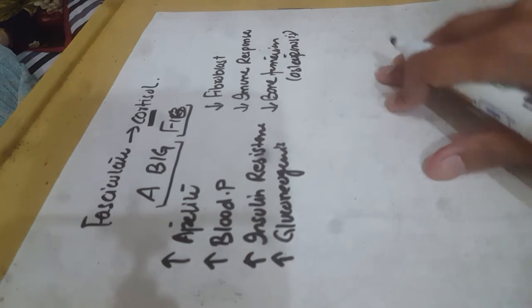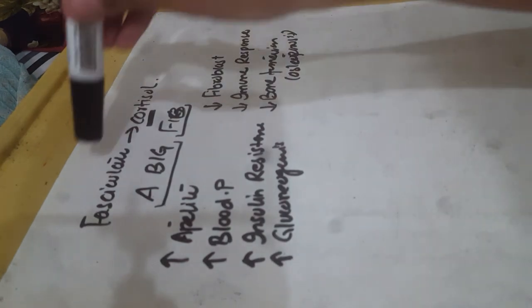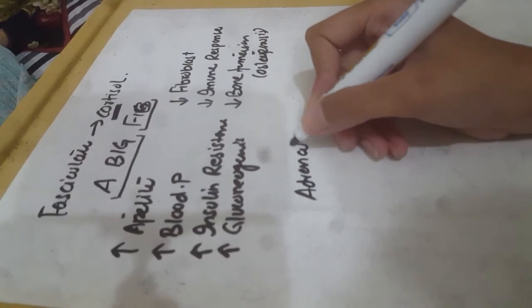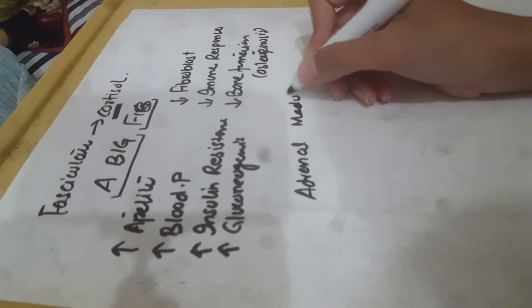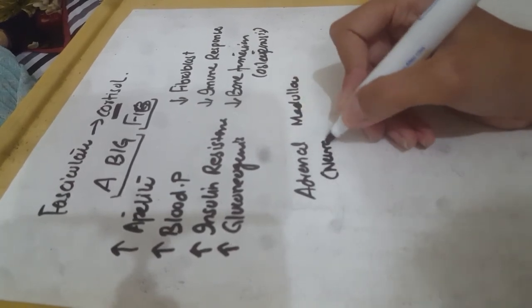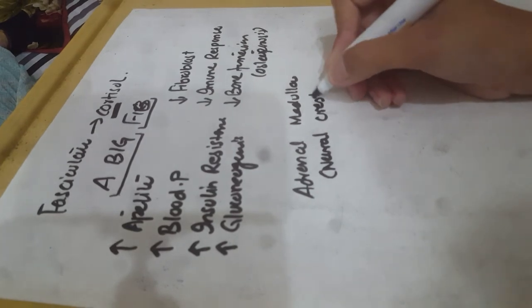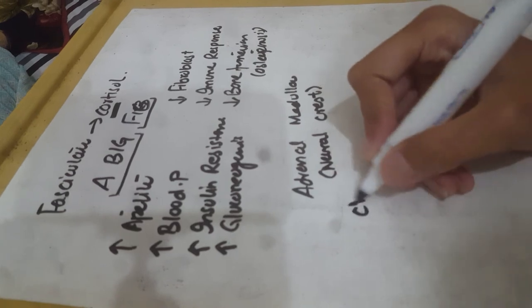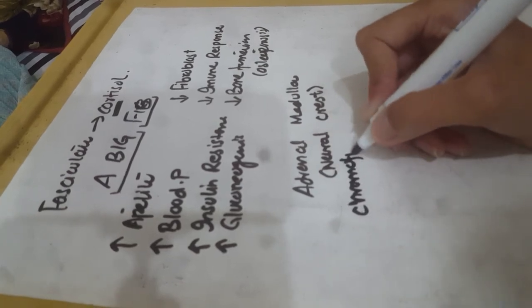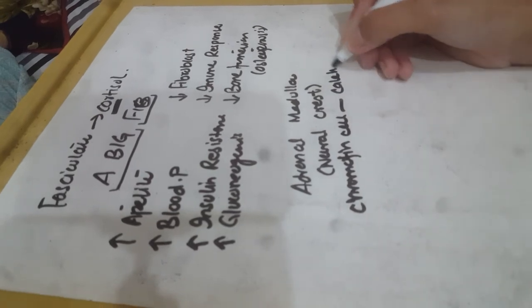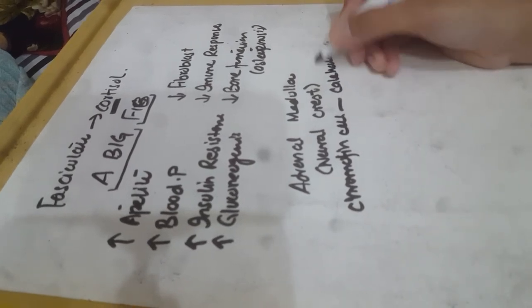Now for adrenal medulla — it is the inner layer. The adrenal medulla is derived from neural crest, while the adrenal cortex is derived from mesoderm. Chromaffin cells in the adrenal medulla secrete catecholamines.